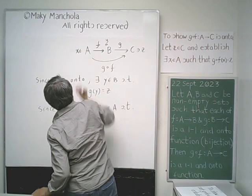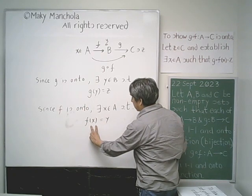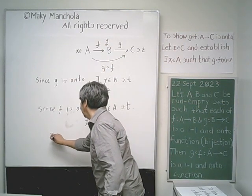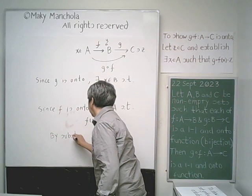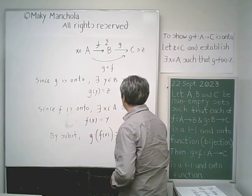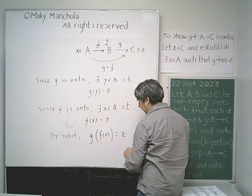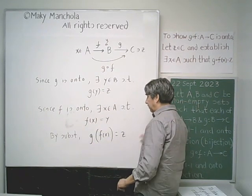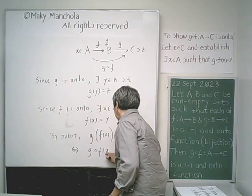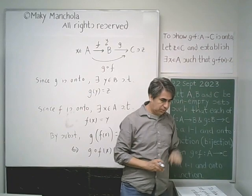Now let's make a substitution. Take Y, which equals F of X, and substitute it into G of Y equals Z. We obtain by substitution that G of F of X equals Z. The meaning of G of F of X is G composed with F evaluated at X, and that equals Z, which is what we intended to establish.